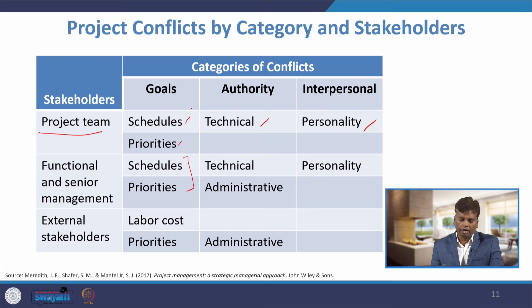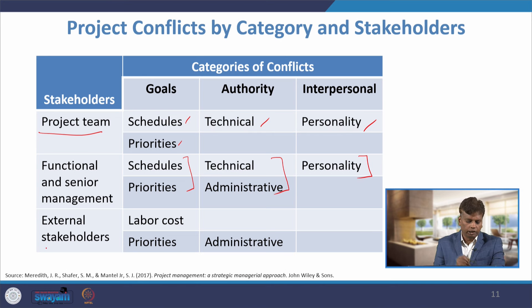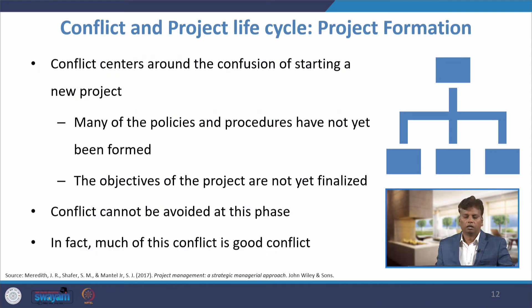Functional and senior management may also have conflict on technical and administrative responsibilities, which comes under the category of authority-related conflicts. There may also be personality issues between functional and senior management, and conflicts due to labor cost and priorities or administrative responsibilities, which fall under the authority category of conflict.